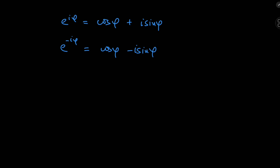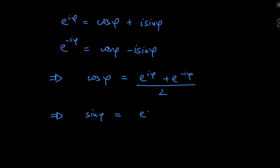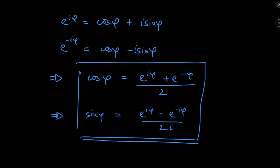So we have a couple of equations that we can solve for the cosine and sine functions. Adding the equations, we can solve for cosine: cosine(phi) equals e to the i·phi plus e to the negative i·phi divided by 2. Subtracting them yields the sine function: sine(phi) equals e to the i·phi minus e to the negative i·phi divided by 2i. These two equations express the sine and cosine functions in terms of the complex exponential.